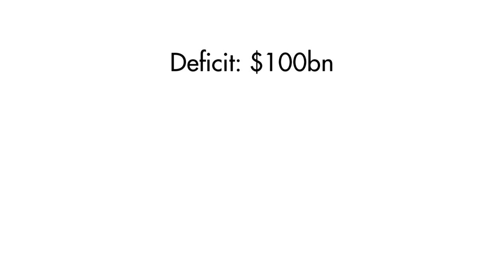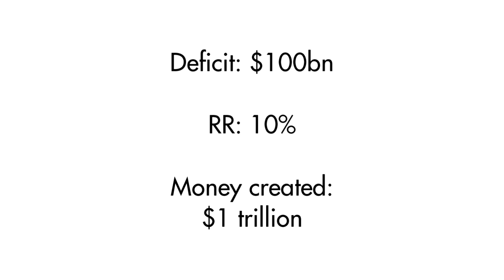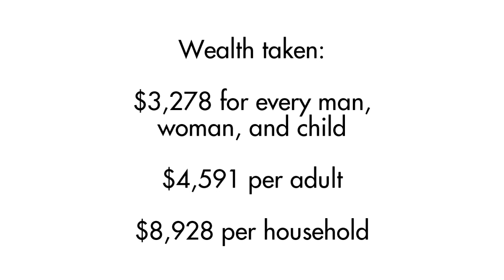If the government runs a $100 billion deficit — low by today's standards — the Treasury sells bonds to the Fed, and the Fed increases the money in the Treasury's account by $100 billion. Once it goes through the banking system, with banks, firms, and people like you and me taking out loans and depositing our paychecks, when it's all said and done, a total of $1 trillion will have been created essentially out of thin air. All $1 trillion of it contributes to inflation and ultimately takes the value from our paychecks by making prices in the stores and at the gas pump higher, and from our savings by making the dollar worth less — all so the government can spend beyond its means.